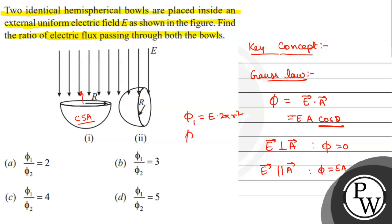So phi_1 by phi_2 - the ratio that we get will be equal to 2. Therefore, the correct option will be option A.